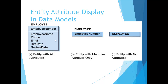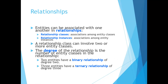This figure shows the different ways to display entity attributes in a data model: you can display all attributes with identifiers, identifiers only, or just the name of the entity with no attributes at all. Entities can be associated with one another in relationships. If associations are among entity classes, it is called a relationship class. If associations are among entity instances, it is called a relationship instance.